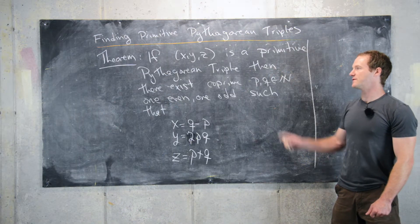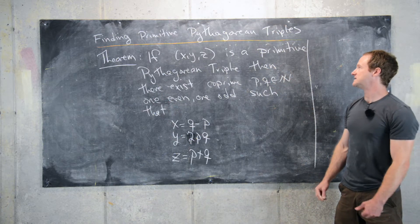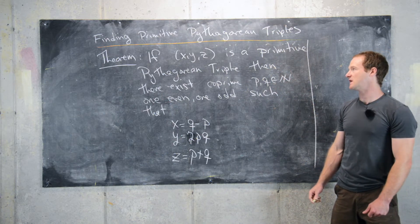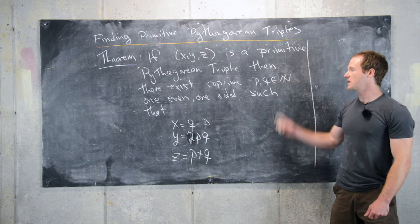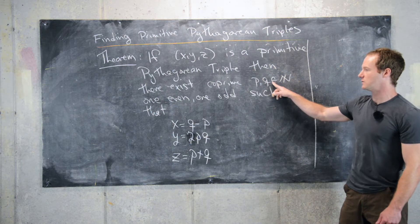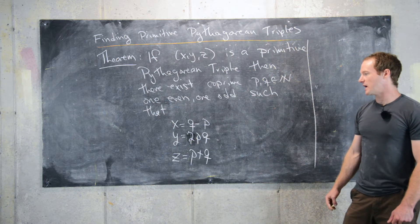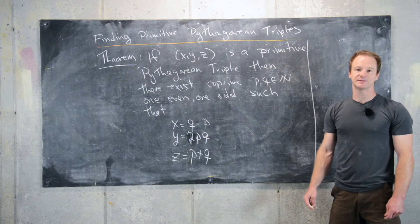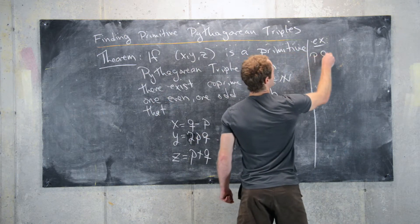Throughout this video we have established the following theorem. If (x, y, z) is a primitive Pythagorean triple — meaning GCD(x,y,z)=1 and x²+y²=z² — then there exist coprime natural numbers p and q, one even and one odd, such that x = q² − p², y = 2pq, and z = p² + q².